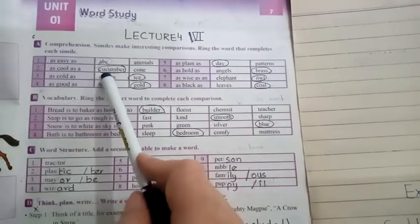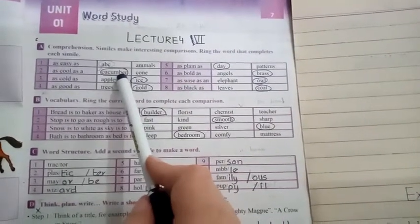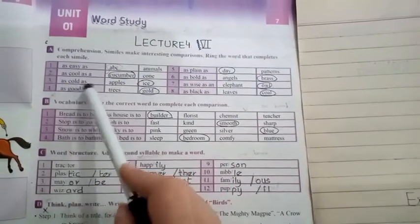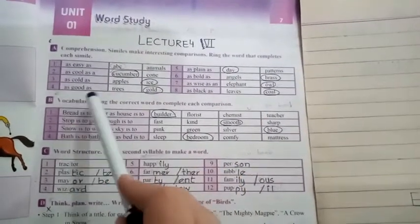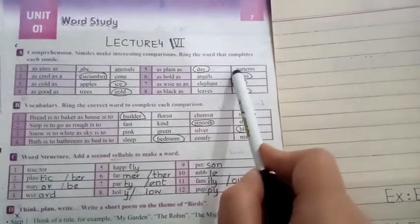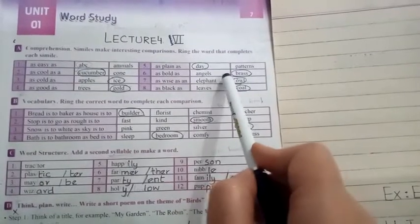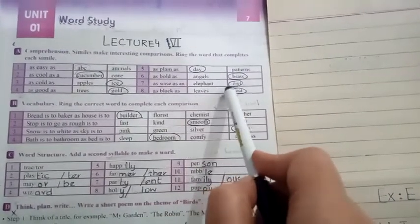So the word easy is related to ABC and that is why you encircle it. As cool as a cucumber or a corn. So the word cool is relating here to cucumber more, so you will encircle it. As cold as apples or ice, definitely ice. As good as trees or gold. As plain as a day or patterns. As bold as angels or brass.